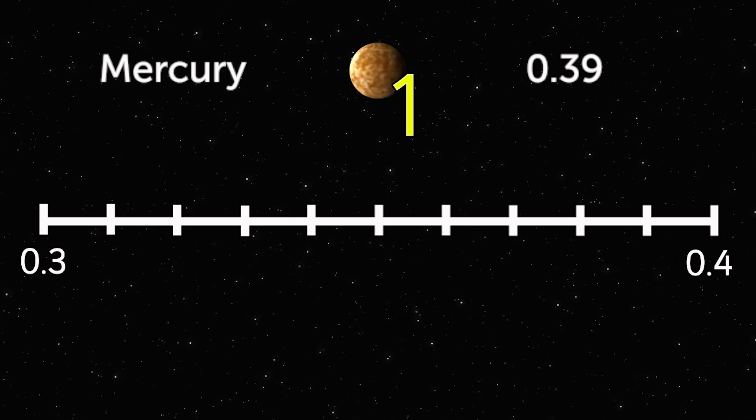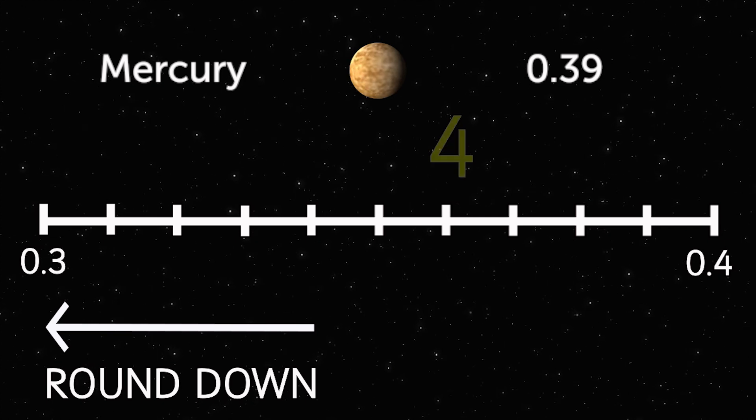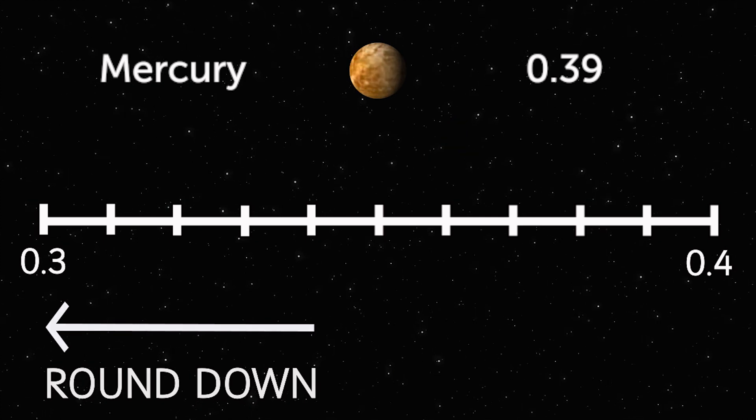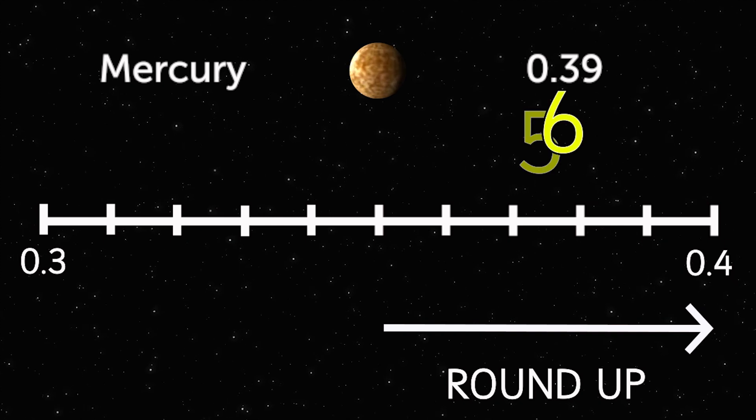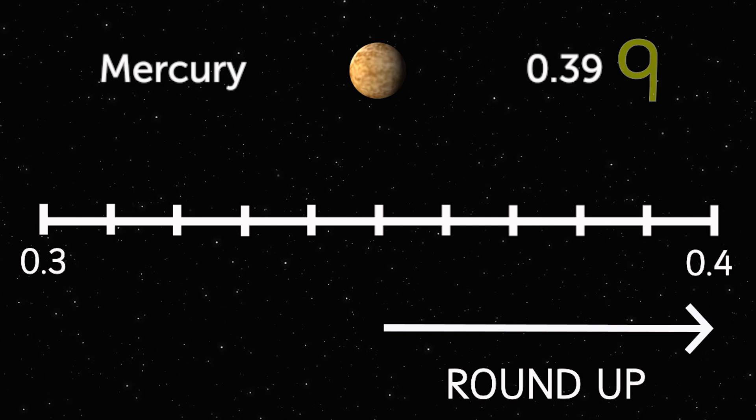If the digit is 1, 2, 3 or 4, you will round down. Or if it's 5, 6, 7, 8 or 9, you will round up.